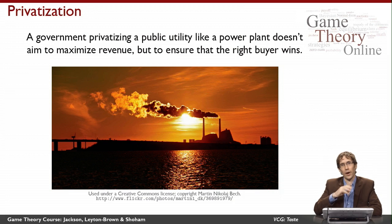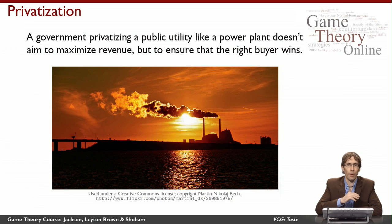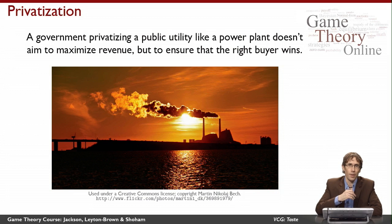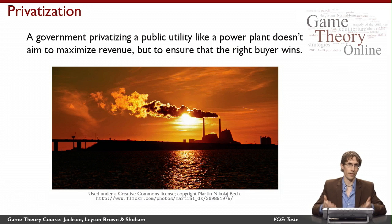Let's start with the simplest example: allocating a single thing among a set of agents. Imagine a government that wants to privatize a public utility like a power plant. When a government wants to privatize something, it's not usually because it just wants to collect money. Instead, the government thinks the public utility could be more efficiently operated by somebody in the private sector. The government typically wants to figure out which among potential buyers values the utility the most, because that's the buyer who would most efficiently operate it. The problem is that if the government just asked buyers how much they value the power plant and gave it to the highest claimant, buyers would lie — they'd all claim very high values in hopes of being selected, and the government would probably not give the plant to the right company.